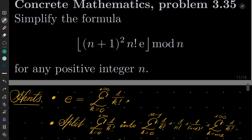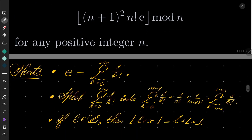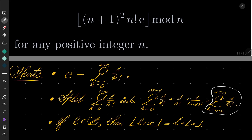Here are my hints. First, use the well-known property that e can be written as a series from k=0 to infinity of 1/k!. We replace e by this series and split it into three different sums: first from 0 to n−1 of 1/k!, then 1/n!, then 1/(n+1)!, and the rest from n+2 to infinity of 1/k!. Remember that if L is an integer, floor(L + x) = L + floor(x) — L can be put outside the floor function.